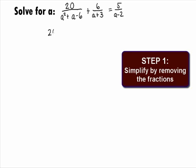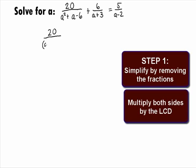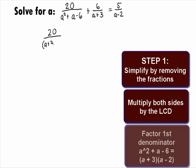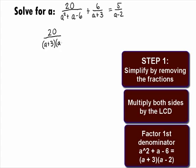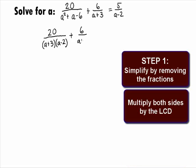In Step 1, we want to simplify the equation by removing the fractions. We can do this by multiplying by the Least Common Denominator or LCD. It looks like we can factor our first denominator and get 20 over a plus 3 times a minus 2 plus 6 over a plus 3 equals 5 over a minus 2.